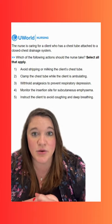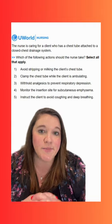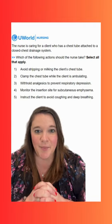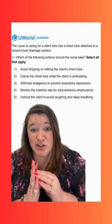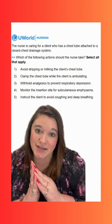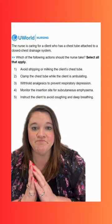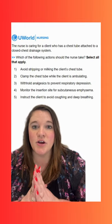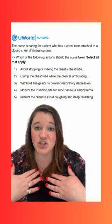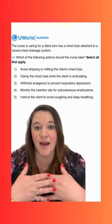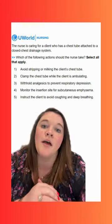Option four says to monitor the insertion site for subcutaneous emphysema. This is going to be a correct option. Subcutaneous emphysema happens when at that insertion site — where we have a hole that's not normally there — air can get into the tissue there, and that'll feel on palpation like a crackling kind of feel. So we want to monitor the insertion site, but also we want to monitor the client's chest around their neck, because anytime we have subcutaneous emphysema there, we could be talking about a compromised airway.